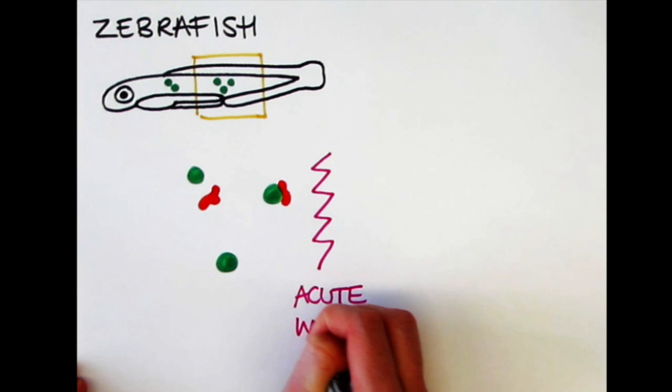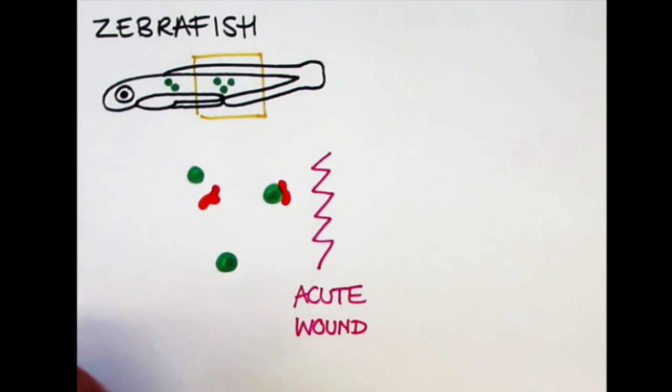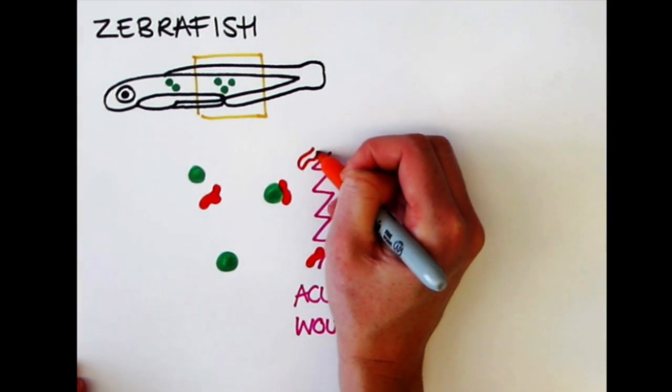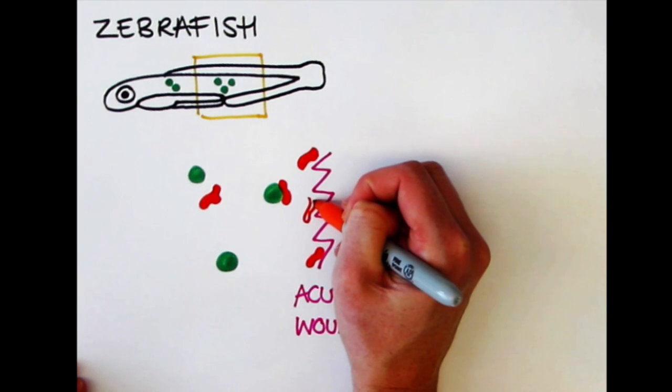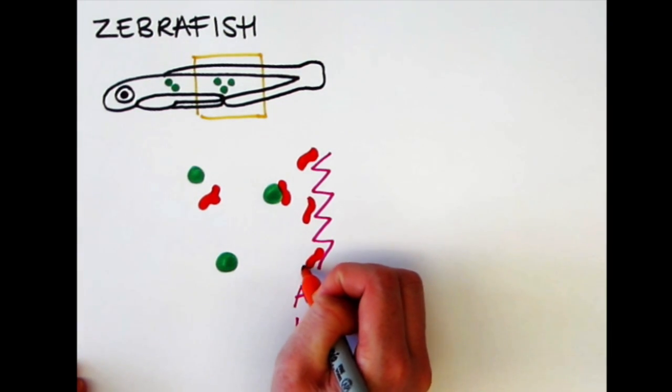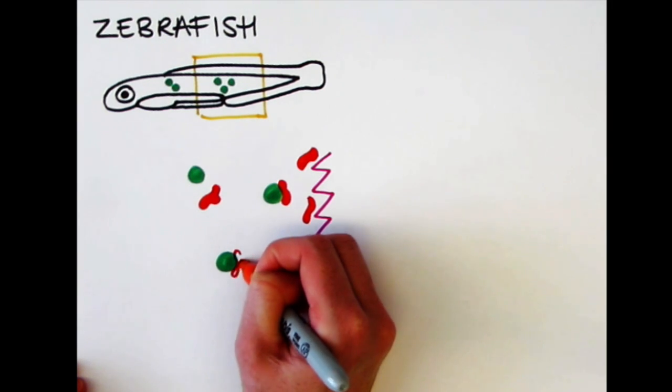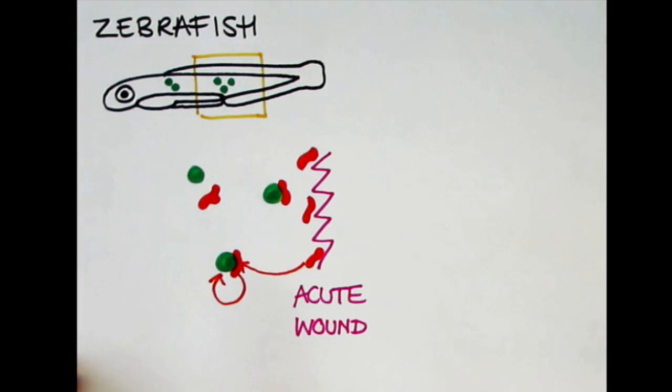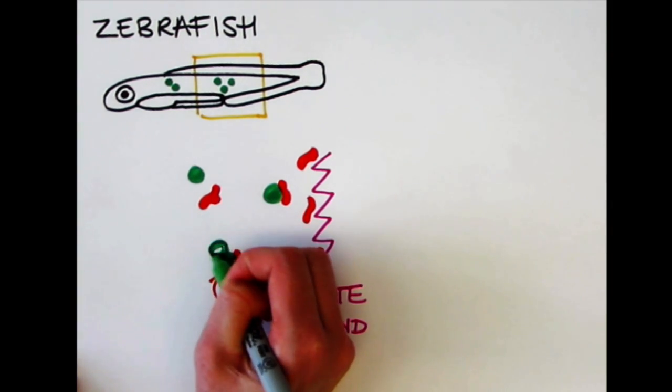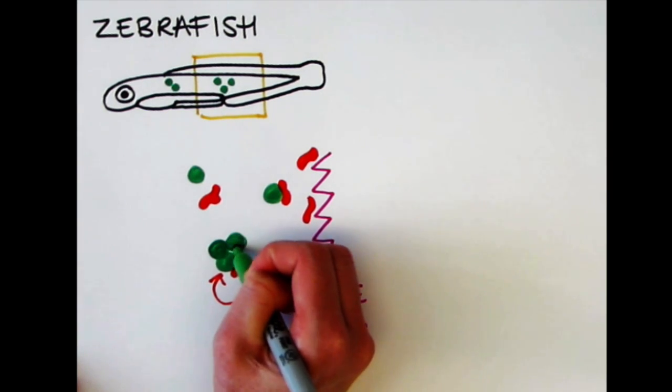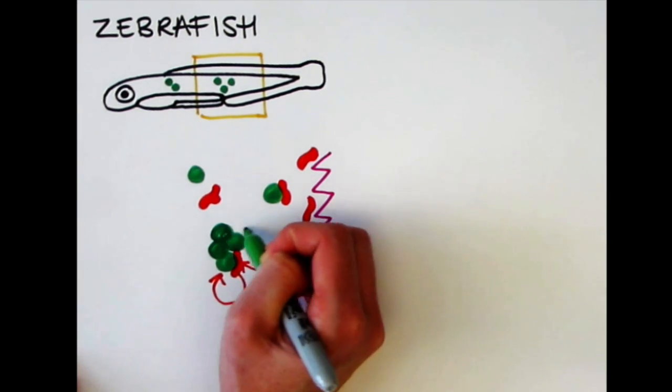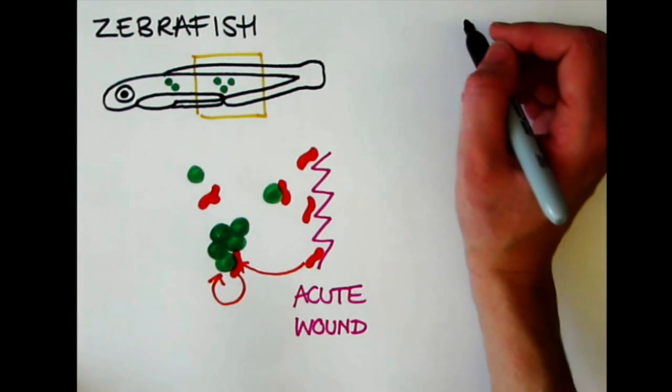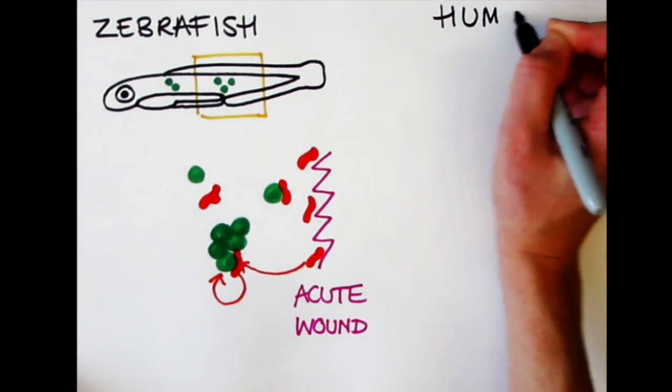What happens if you superimpose on top of that preneoplastic cell growth in the epithelium an acute wound, for example a biopsy or a cancer surgery? You get this massive recruitment of innate immune cells to the wound site. Those neutrophils are distracted away from the acute wound site to nearby preneoplastic cells in the vicinity. Once there, they deliver trophic signals, growth factors. In fact, we know one of these is prostaglandins, but there are others that we don't know. That encourages these preneoplastic cells to grow much more than they otherwise would if there hadn't been a wound.